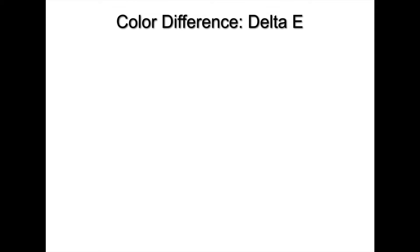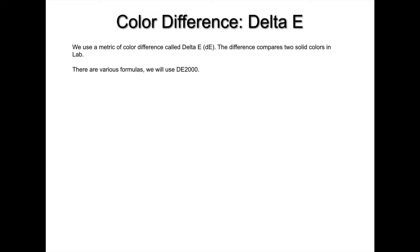We need to talk about something called Delta E — a metric for defining color difference. We're going to use this for the rest of the presentation, so for those who may be new to Delta E, there are several formulas for specifying it. We're going to use Delta E 2000, which is a better formula for looking at very small differences in color.